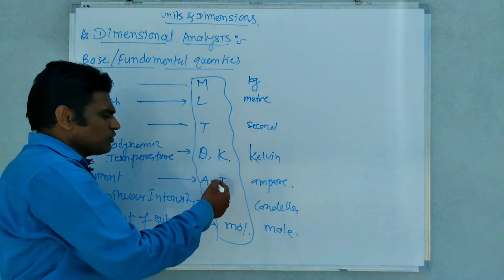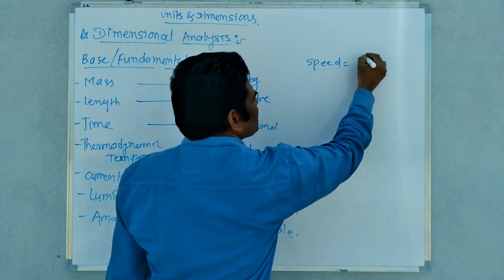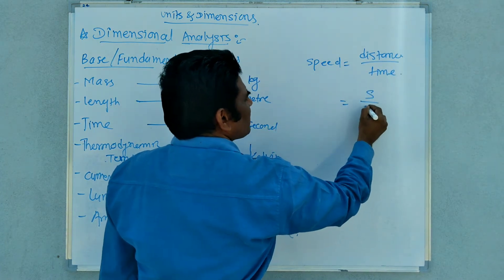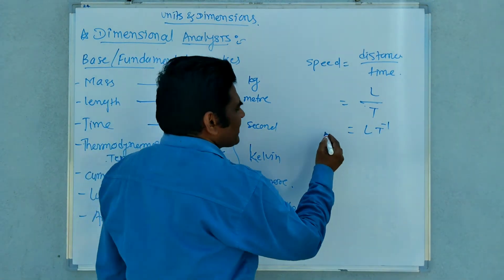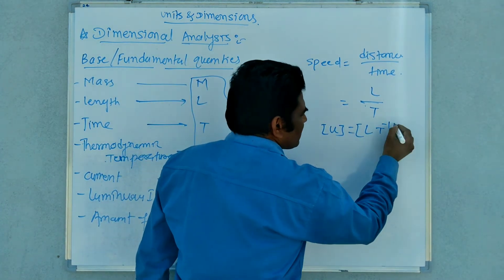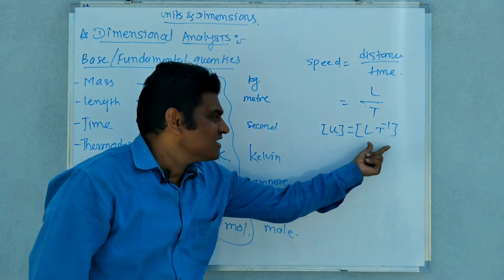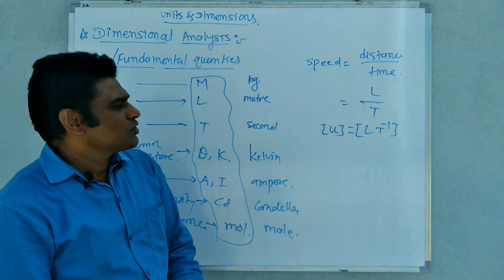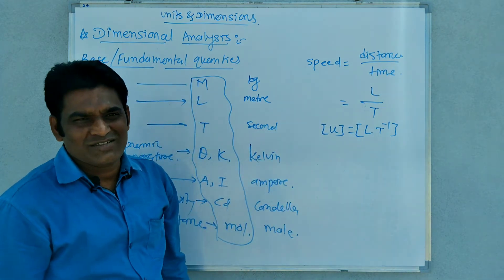In the symbolic format, to describe a physical quantity we use these fundamental base quantities. Suppose you want to express speed: speed is distance upon time. Distance means length, so this is L upon T, which can be written as L¹T⁻¹. In this way we can explain a derived quantity by using fundamental quantities. This is the dimensional formula for speed, written in square brackets.